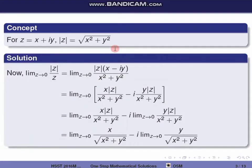To find limit z tends to 0 of mod z by z, we replace z in the denominator with x plus iy, then multiply numerator and denominator by x minus iy. So we get mod z into (x minus iy) divided by (x plus iy)(x minus iy), which gives mod z divided by x squared plus y squared.